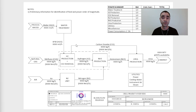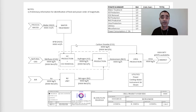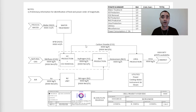Another important thing to estimate at the early stages of project definition is the amount of power required for each unit. What the company will verify is whether the price asked for the product is feasible, comparing the cost of raw materials and also with the power required.